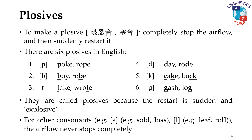In contrast, consonants like S or L do not have a sudden stop and then restart of the airflow. So in words like sold, loss, leaf, roll, the air never stops completely.